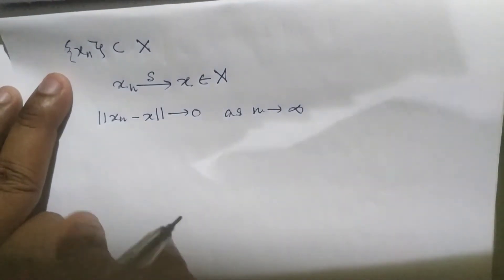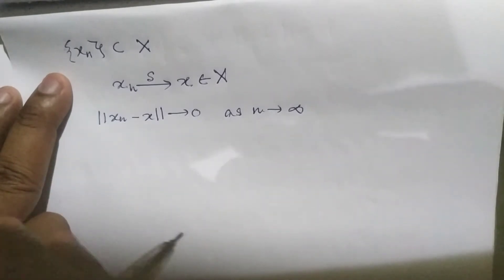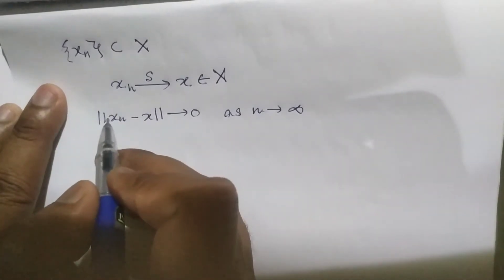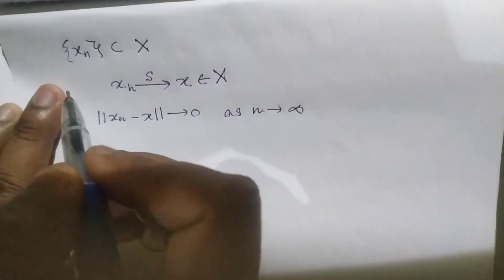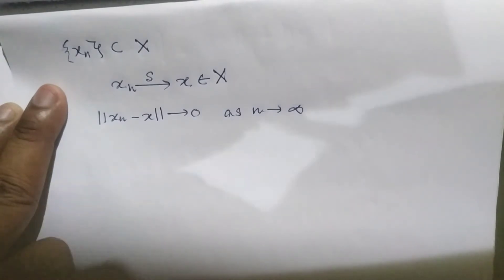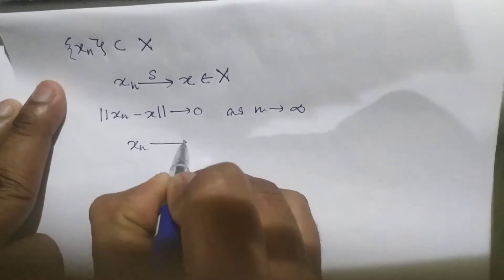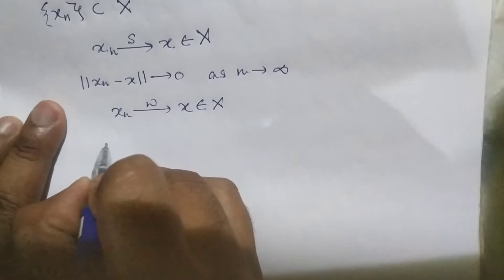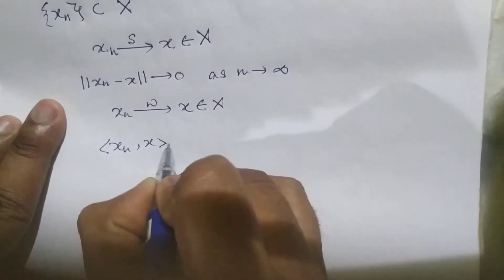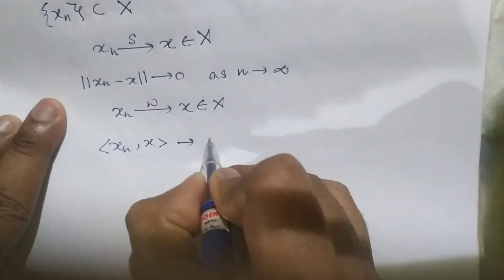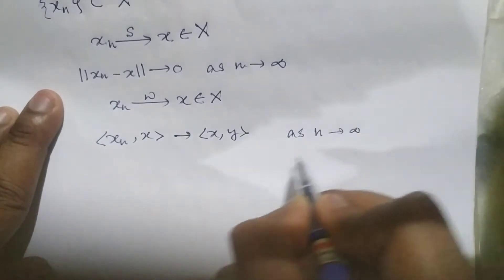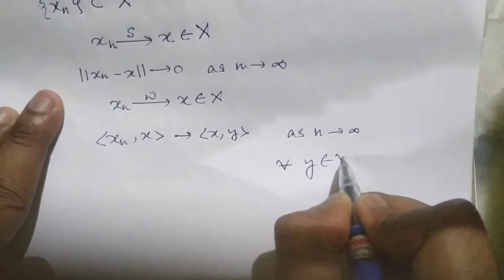So when we say strongly convergent, we also want to ask about weak convergence — why is it strong and why is there a weak counterpart? The sequence xn of vectors in an inner product space X is called weakly convergent to an element x belonging to X if the inner product of xn and y tends to the inner product of x and y as n tends to infinity, for all y belonging to X.